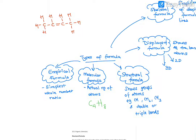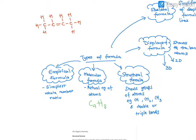The empirical formula is the simplest whole number ratio — so it's a number that can divide all the numbers. Here we can have the simplest whole number ratio, which gives us CH2. So CH2 is the empirical formula for this molecule.